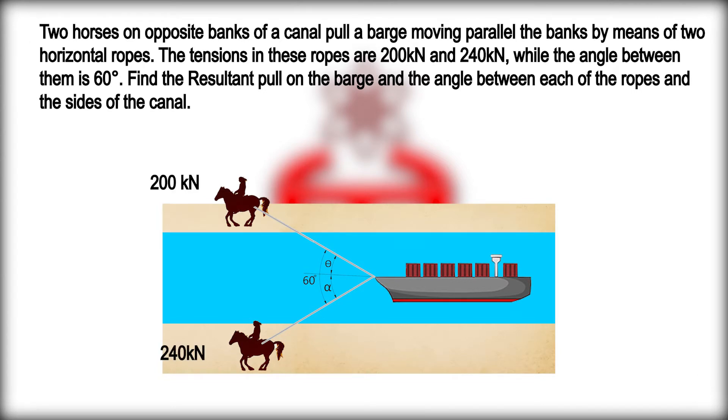The angle between them is 60 degrees. Find the resultant pull on the barge and the angle between each of the ropes and the sides of the canal. Let us first solve summation of forces in the vertical direction.